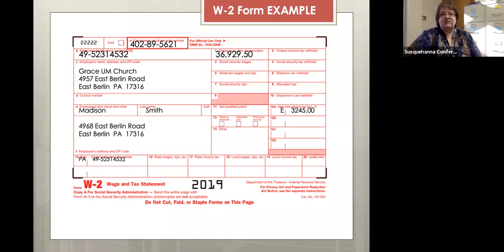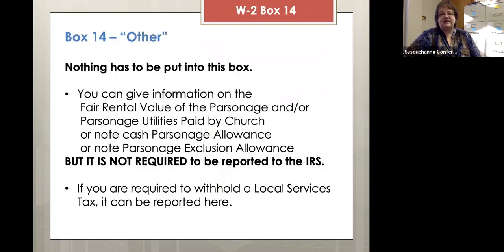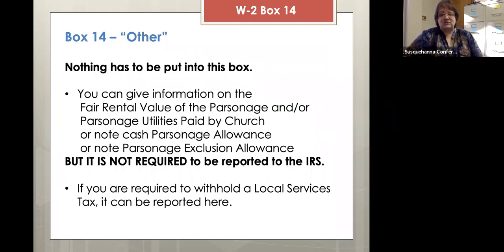One other thing that should be marked is in box 13 — the retirement plan box could be marked here as well. Next is box 14, titled Other. What do you put in here? You don't have to put anything in this box, but there are some options. If you have to withhold a local services tax for your pastor, you could denote that here.